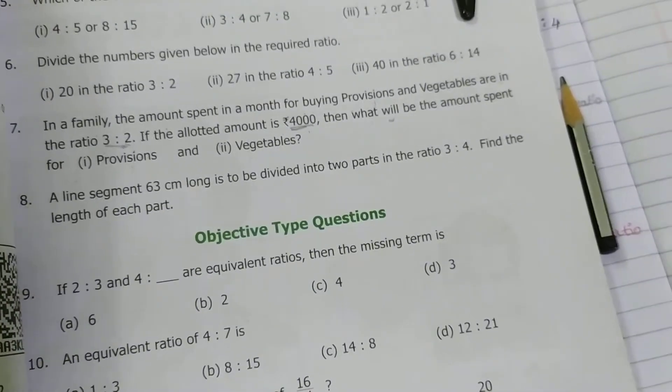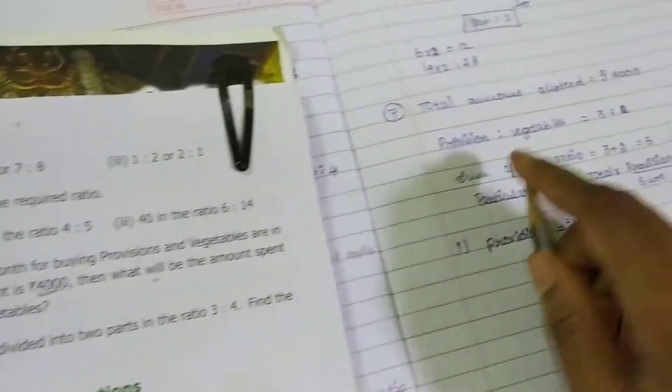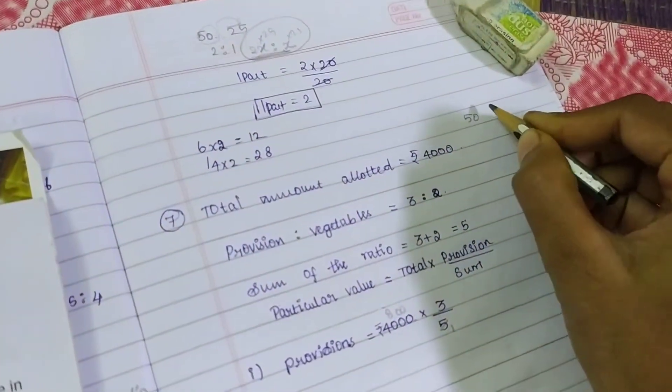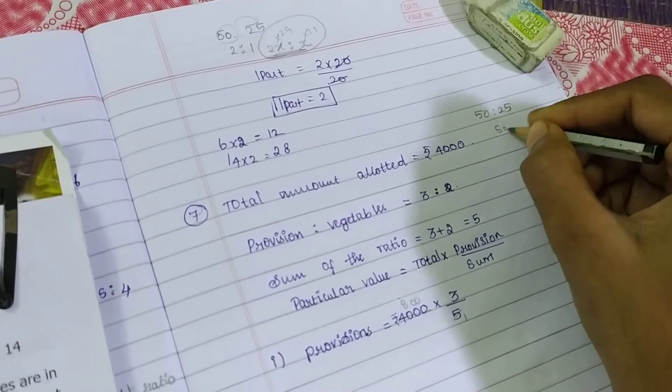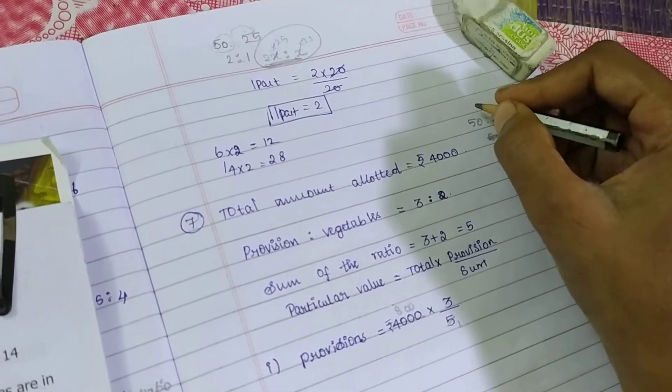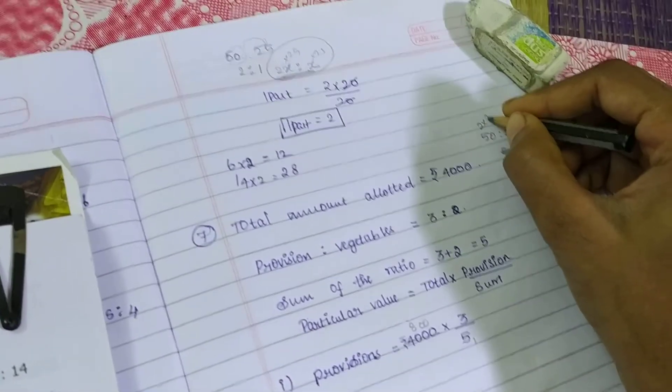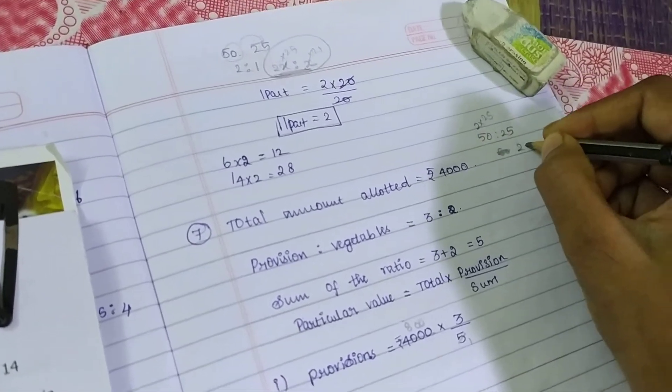For example, if you are buying chocolates, one is for 50 rupees chocolate, another is for 25 rupees chocolate. What is the ratio? This is 2 times of 25. So what is the ratio? 2 is to 1.